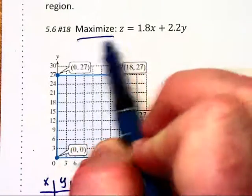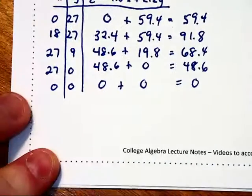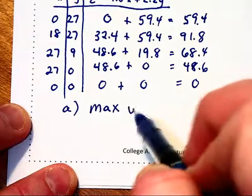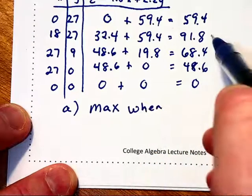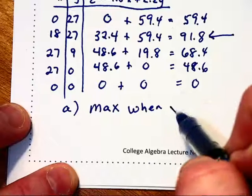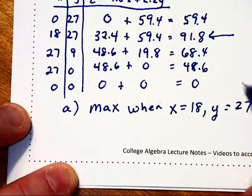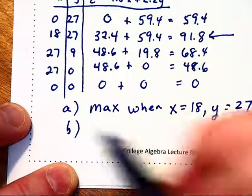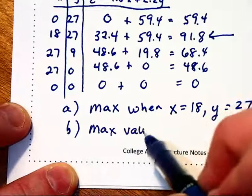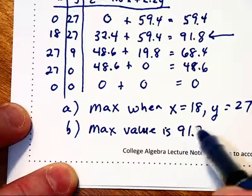So part A, we are going to find the max when, well that'll be the second row in that chart there, when x is equal to 18 and y is equal to 27. And for part B, they want to know what is the maximum value. The maximum value is 91.8.